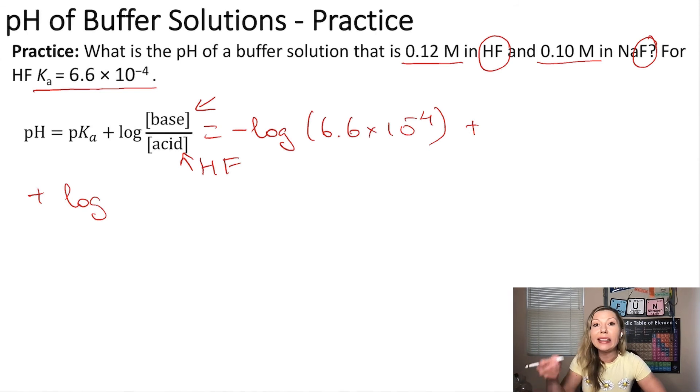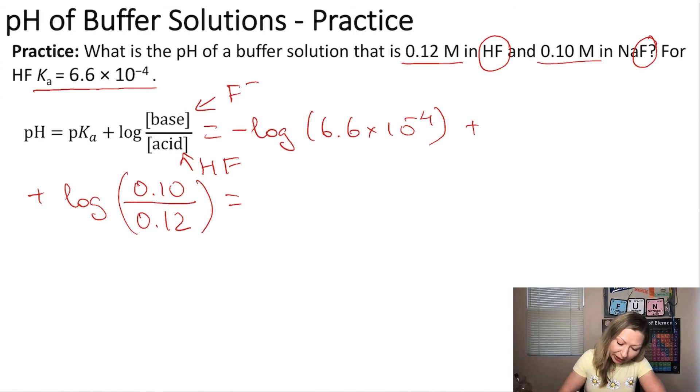And because sodium fluoride is a strong electrolyte, it completely dissociates in aqueous solution, so its concentration equals the concentration of the fluoride ions, F-. All right, so let's just plug in the values. The F- concentration is 0.10 divided by 0.12. And if you do this calculation, you get 3.10 as the pH of the buffer solution.